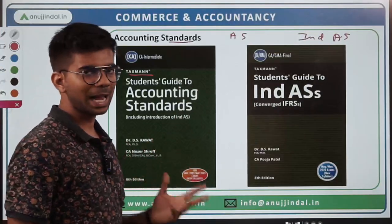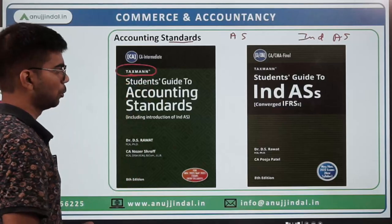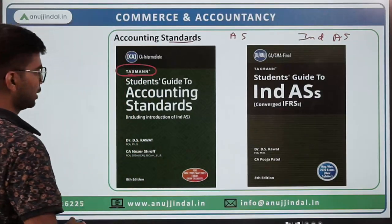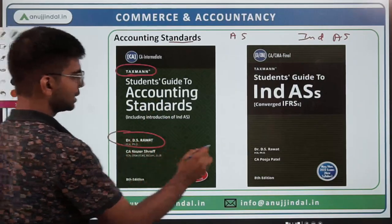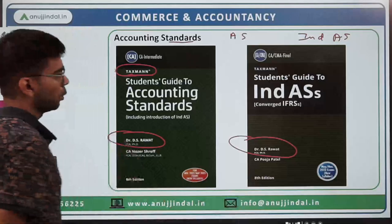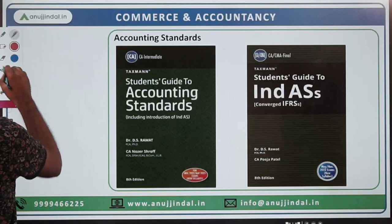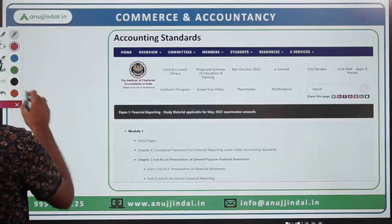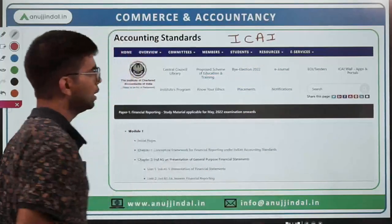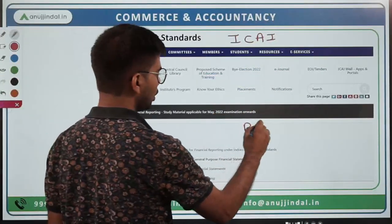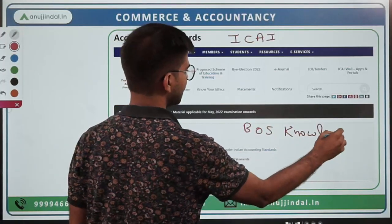For subjects of law and tax, books by Taxman Publishers are generally considered to be good. For Indian Accounting Standards (IND AS) and AS, there are books available by Dr. D.S. Rawat, which are easily available in the market. Otherwise, a lot of material is also provided on the website of ICAI — Institute of Chartered Accountants of India — on their BOS Knowledge Portal. You can refer to their website to study about Accounting Standards and other topics as well.